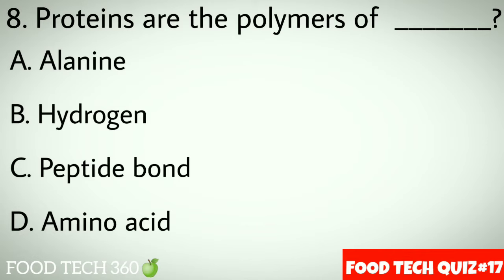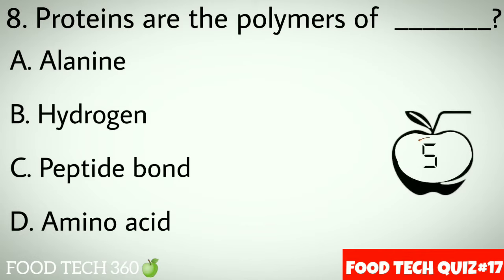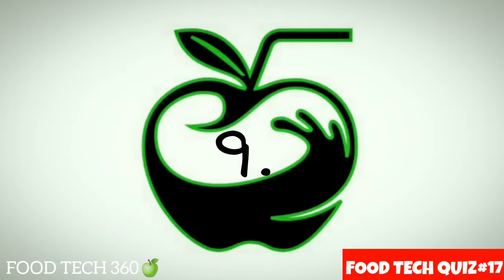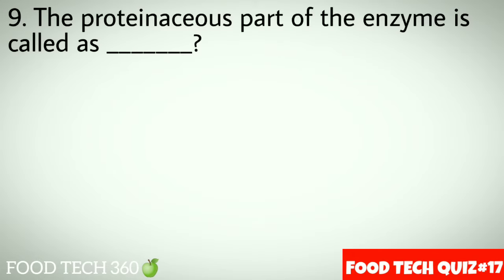Question number 8: Proteins are the polymers of dash. Options: A. Alanine, B. Hydrogen, C. Peptide bond, D. Amino acid. Correct answer: D. Amino acid.